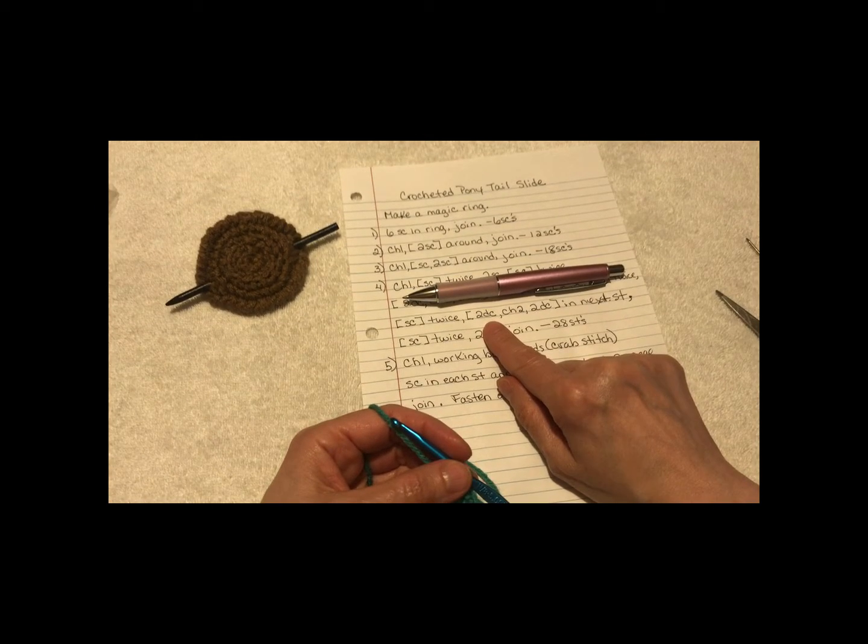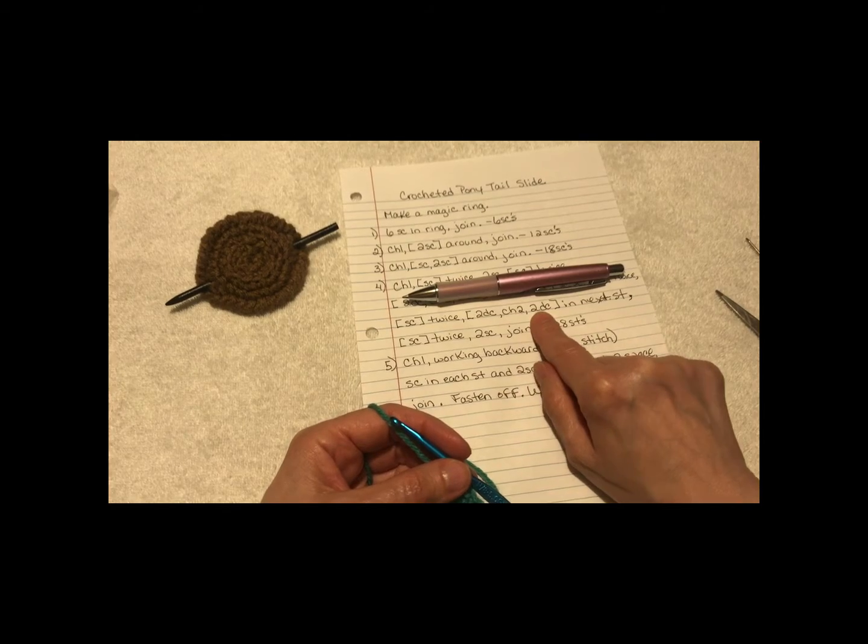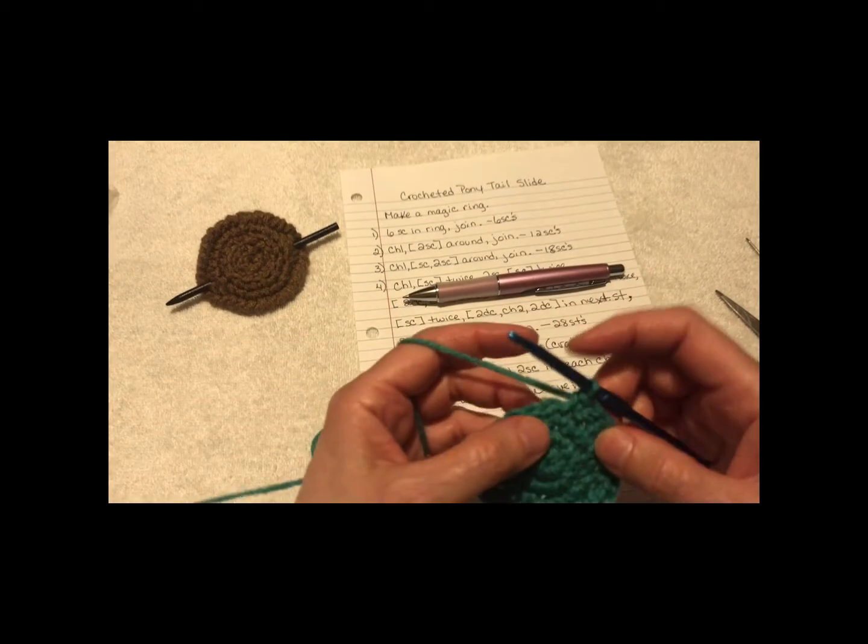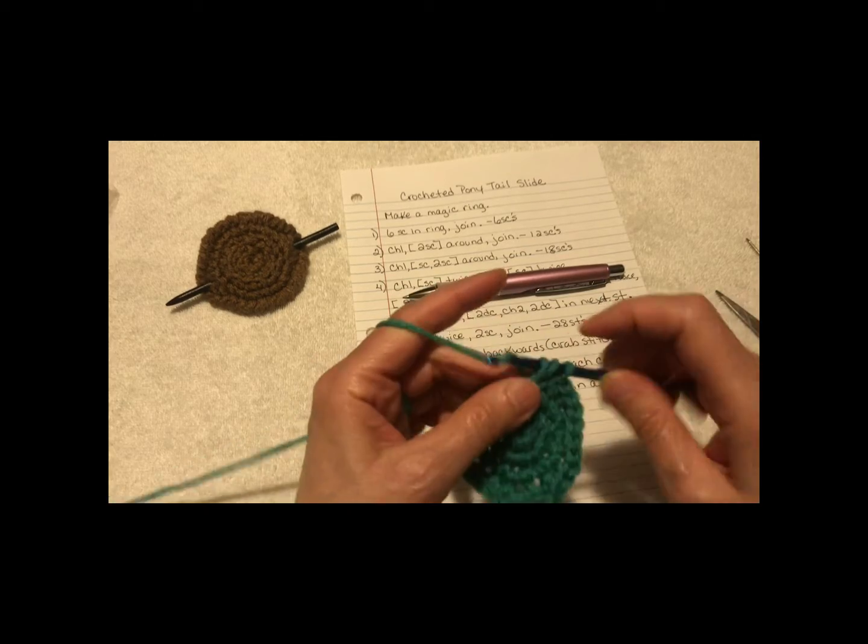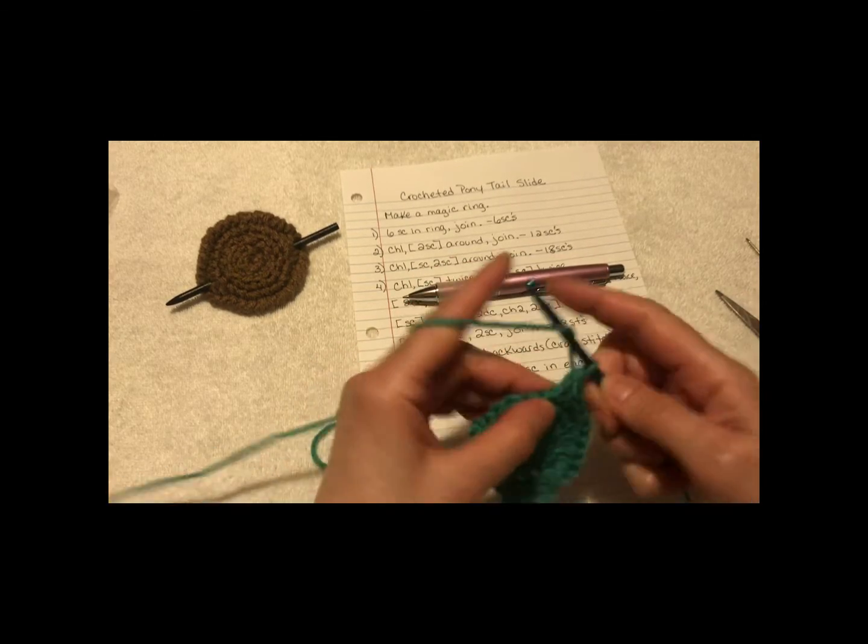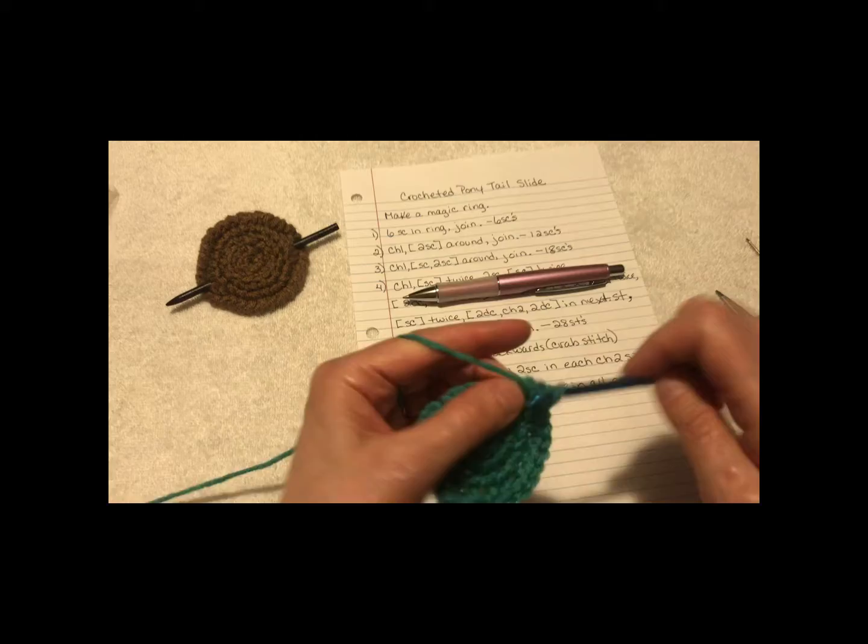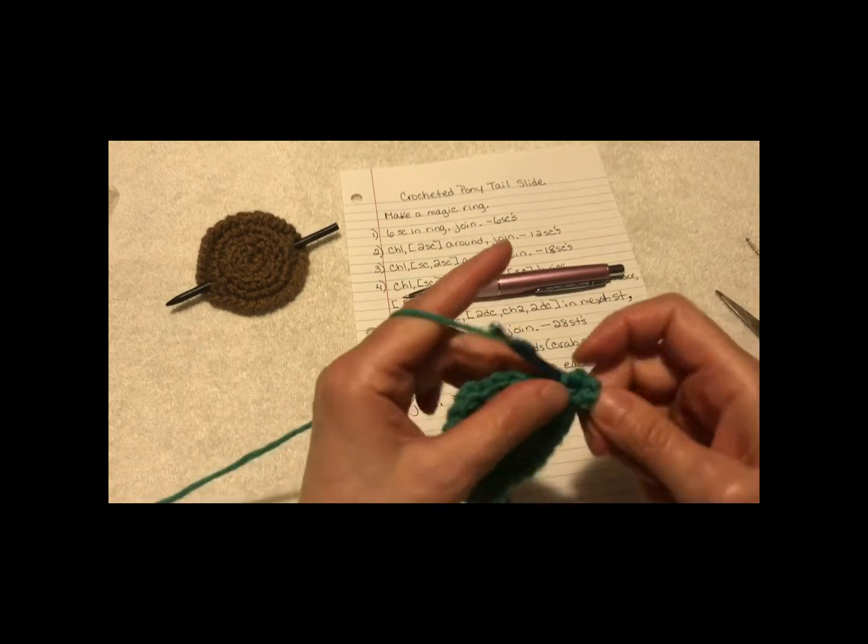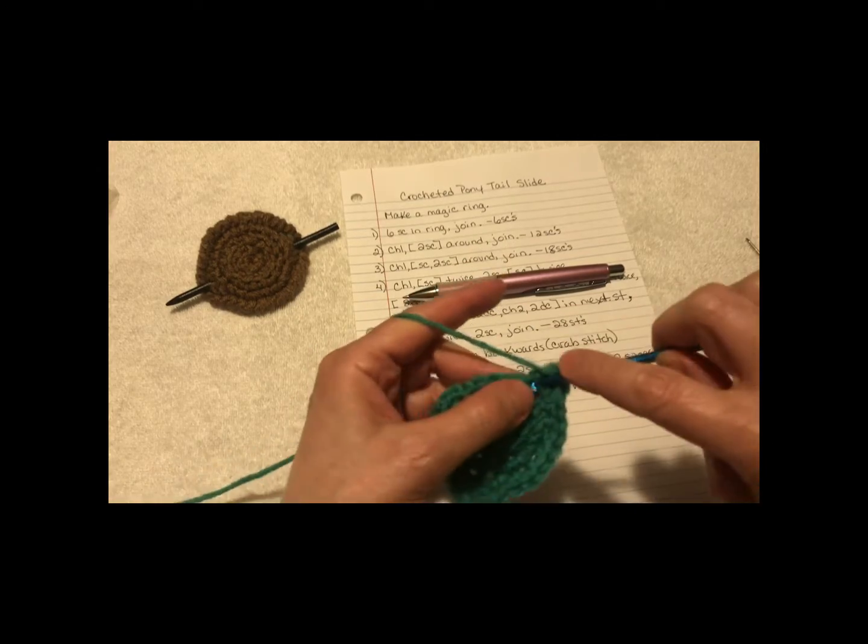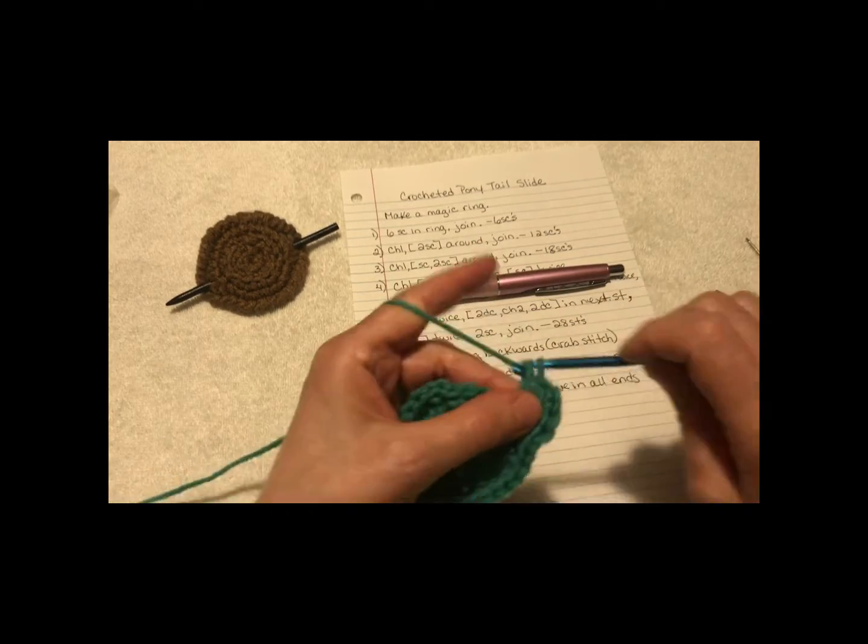Now, we're going to move to this side of where the hole is. 2 double crochets, chain 2, 2 double crochet in next stitch. All this is going to happen in this stitch. So, first double, second double, chain 2, we're still in the same stitch, next double, and the last double.